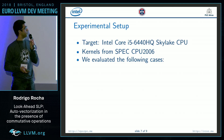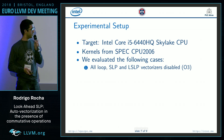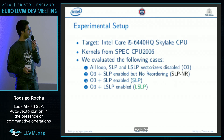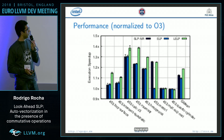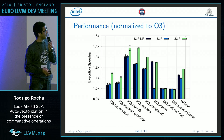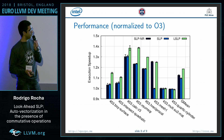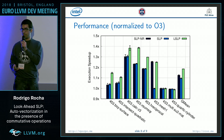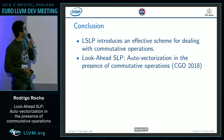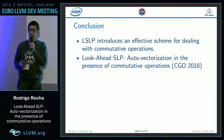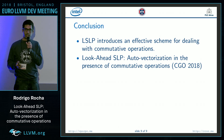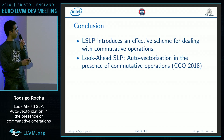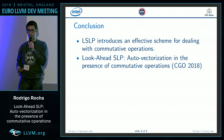We ran experiments using baseline O3 auto-vectorization as a reference, comparing vanilla SLP against our solution. The green bar represents our solution, and on average it improves vectorization compared to the other cases. We introduced the moot node and a look-ahead strategy for doing vectorization. For further information, see the paper published at CGO this year.